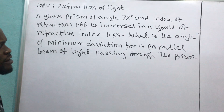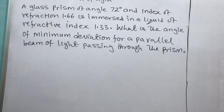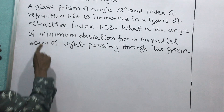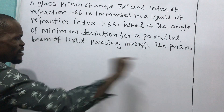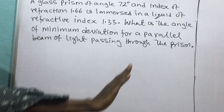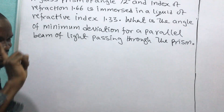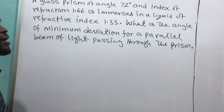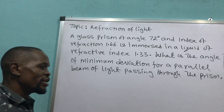For a parallel beam of light to pass through the prism, it means that minimum deviation occurs. For this parallel beam to pass through the prism symmetrically or parallel to the base, it means that minimum deviation will occur. So that's one of the conditions for minimum deviation to occur in a prism.